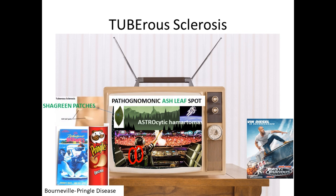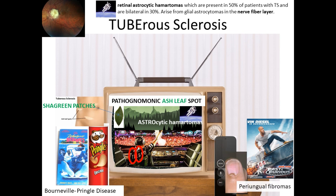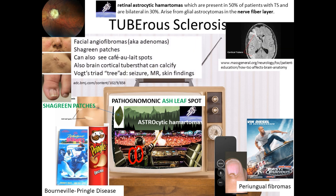The tree background helps remind you of the pathognomonic ash-leaf spot and the shagreen patches. There is also the astronaut symbol, this time to remind you of retinal astrocytic hamartoma, present in 50% of patients with tuberous sclerosis and bilateral in about a quarter of patients. These are superficial nerve masses arising from glial astrocytomas in the nerve fiber layer. TS can also have periungual fibromas and is associated with facial angiofibromas, shagreen patches, and café-au-lait spots.